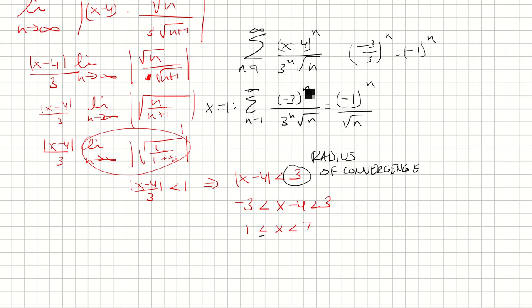Now if we plug in 7, that gives us 3 to the n over 3 to the n square root of n. The 3s cancel, we have 1 over square root of n, which is 1 over n to the 1 half power. Here p is 1 half, it's less than or equal to 1, so it diverges.